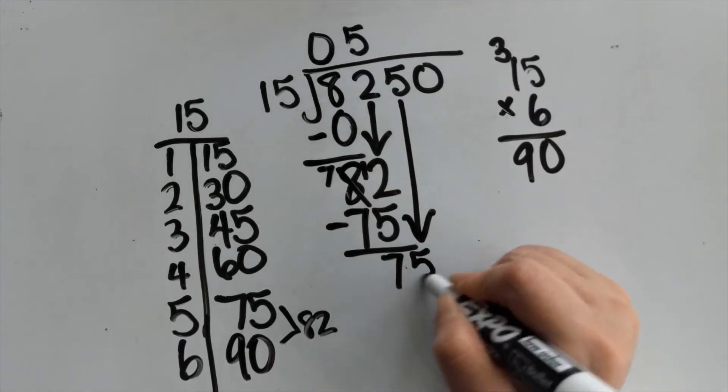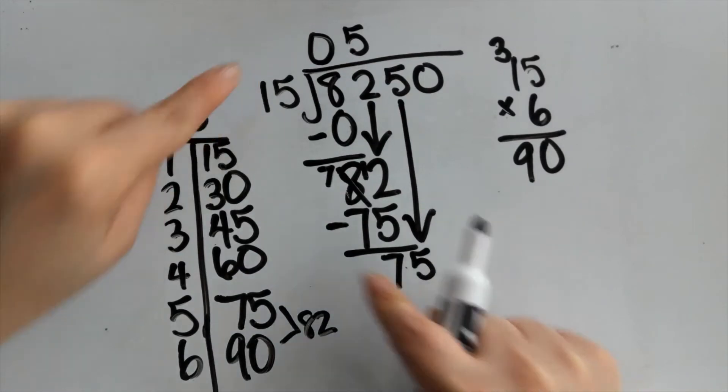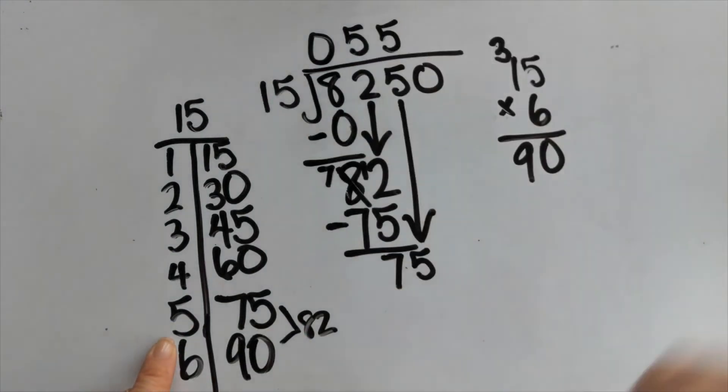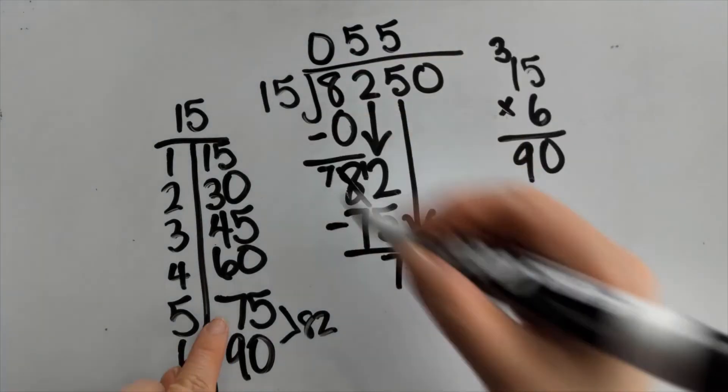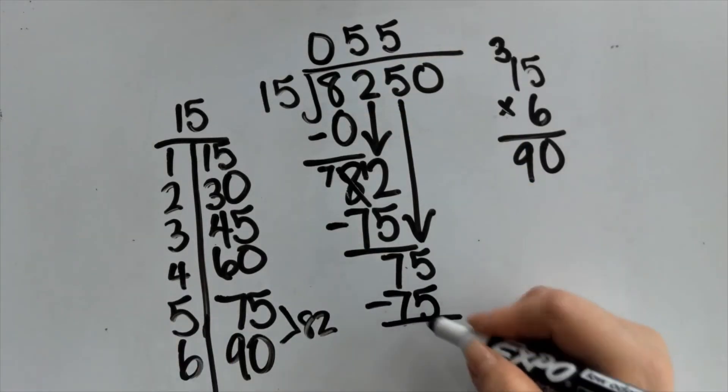Then I'm gonna bring down this 5. Now I have 75 divided by 15. So I'm gonna look back to this chart and I can see that 75 divided by 15 will give me an even 5, even groups. So I already have the answer here, so all I have to do is just bring it in.